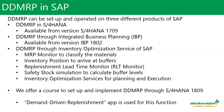In SAP, there are three ways to implement DDMRP: one is through S/4HANA, available from version 1709; another is DDMRP through Integrated Business Planning (IBP); and the third is through SAP's Inventory Optimization Service. We offer a course to set up and implement DDMRP through S/4HANA 1809, which uses the demand-driven replenishment app.